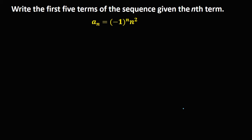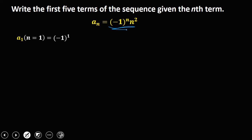To solve for the first five terms, let's start with a sub 1. So for a sub 1, n is equal to 1. Then substitute this value into the formula. So we have negative 1 to the power 1 times 1 squared. Negative 1 to the power 1 is negative 1, and 1 squared is positive 1. So negative 1 times 1 is negative 1. So this is the first term.